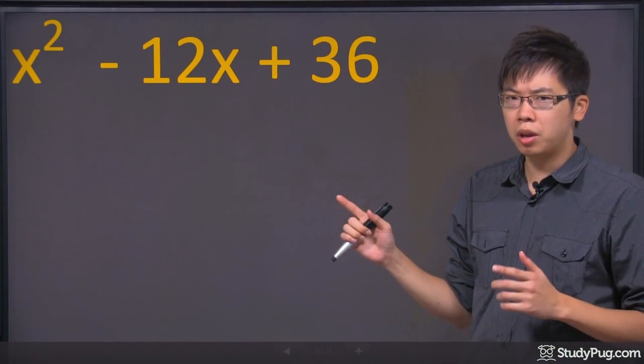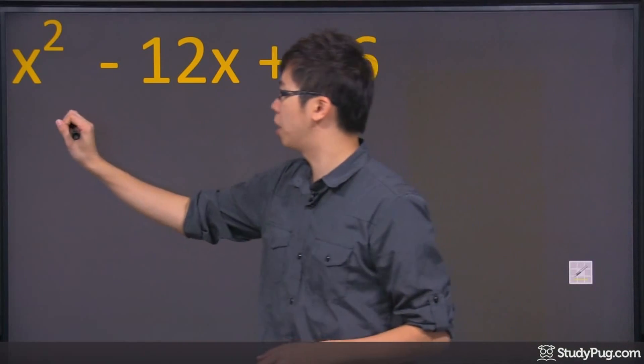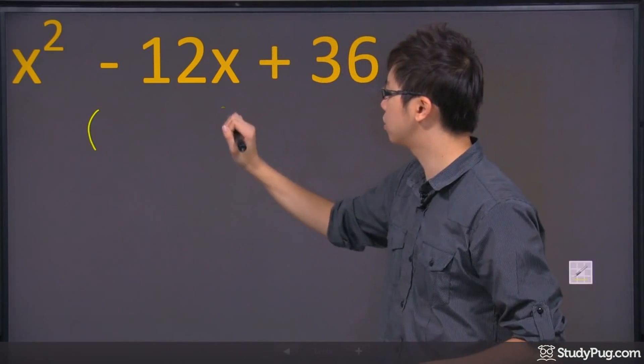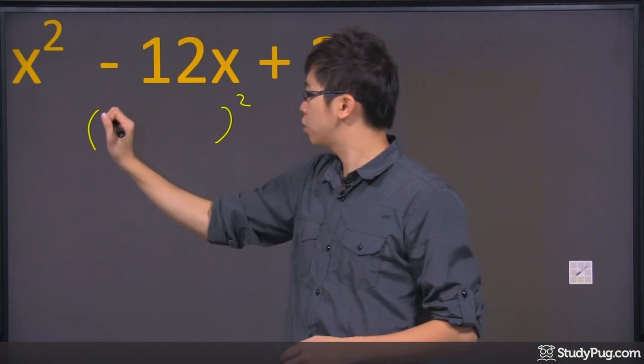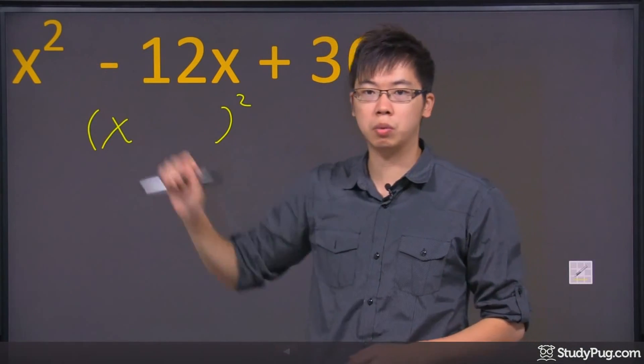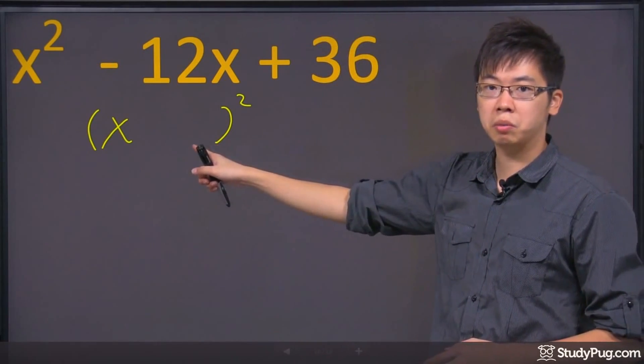But if you go ahead and actually do it, this is what's going to happen. So you're just going to have a bracket like this and the square root from the top ready to go. So the x right here is done. x square is x square, right? What about this number right here?